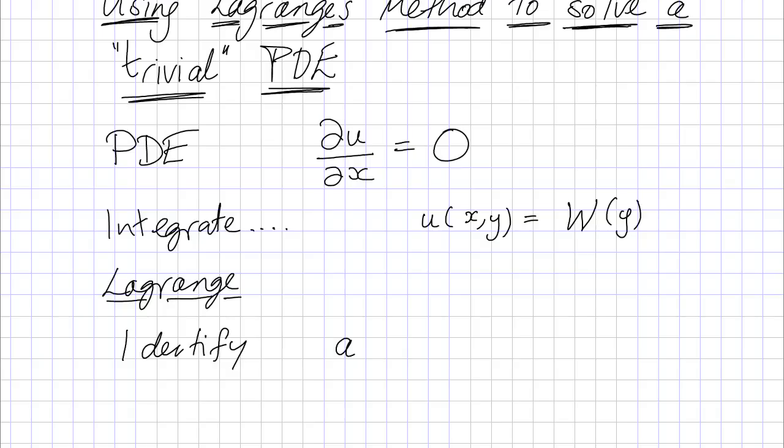So the coefficients that we were calling a, b and c. So a is whatever's in front of ∂u/∂x so that's just 1 here. b is the coefficient of ∂u/∂y so there's no times ∂u/∂y so that's 0 and then finally c is whatever's left over on the right hand side so that's also 0 here.